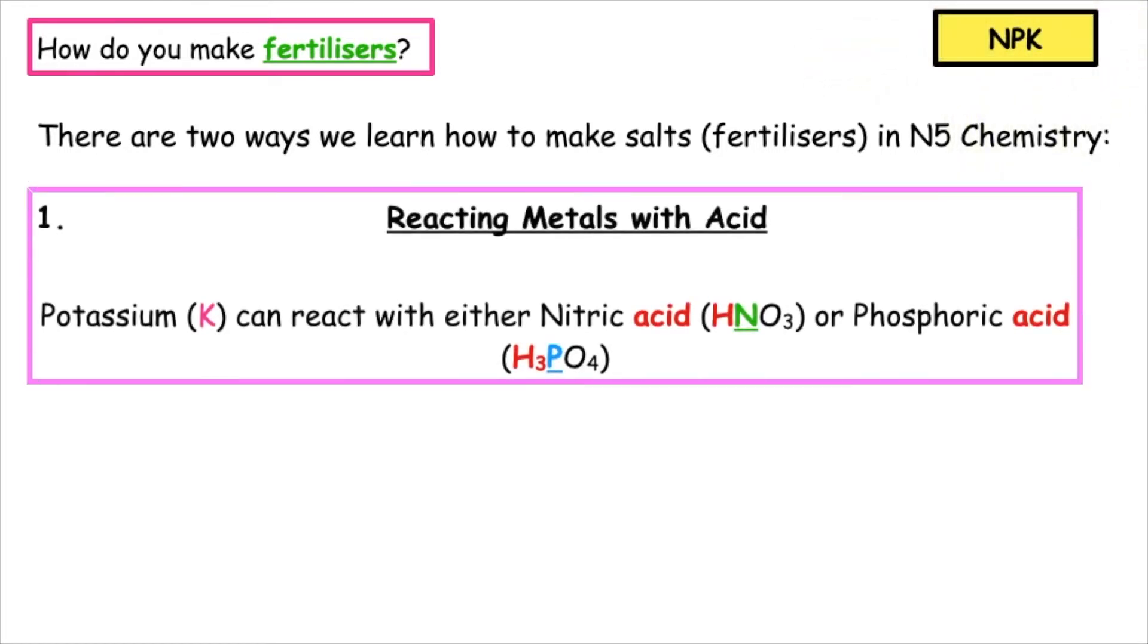Potassium, which has the chemical symbol K, can react with either nitric acid, HNO3, or phosphoric acid, H3PO4.